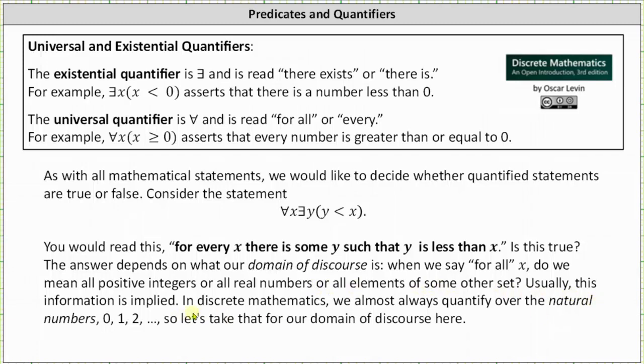Usually, this information is implied. In discrete mathematics, we almost always quantify over the natural numbers, meaning 0, 1, 2, 3, and so on. Let's take that for our domain of discourse here.